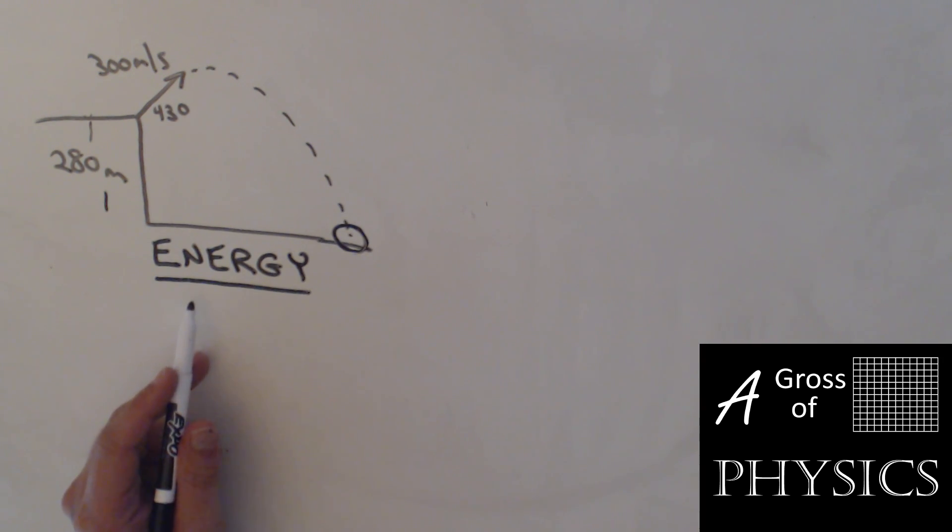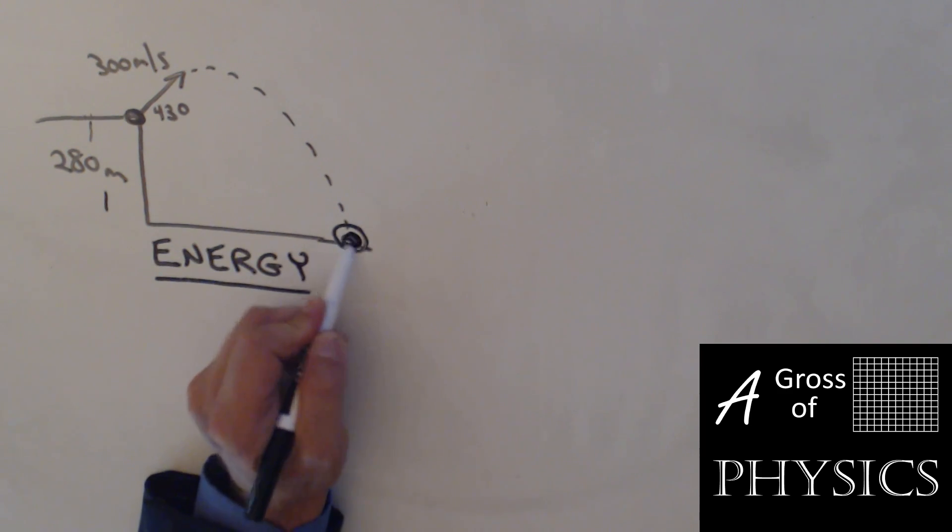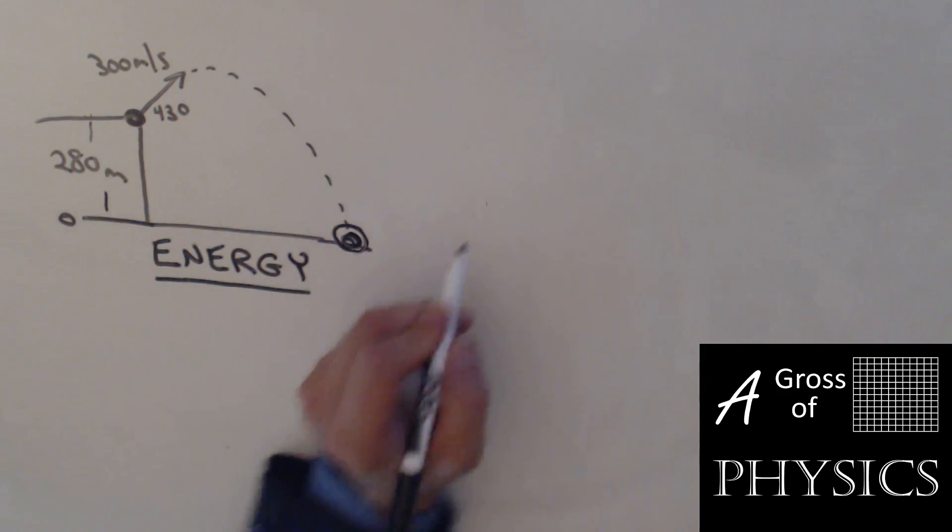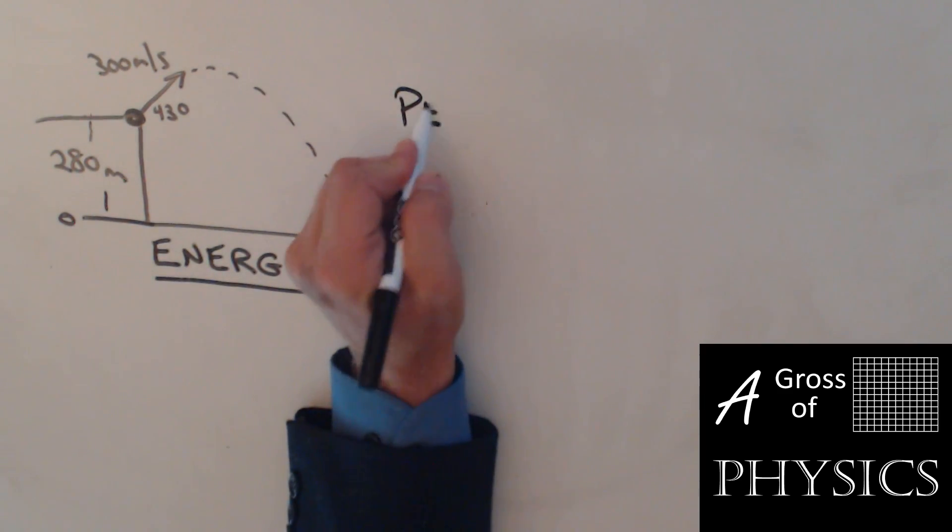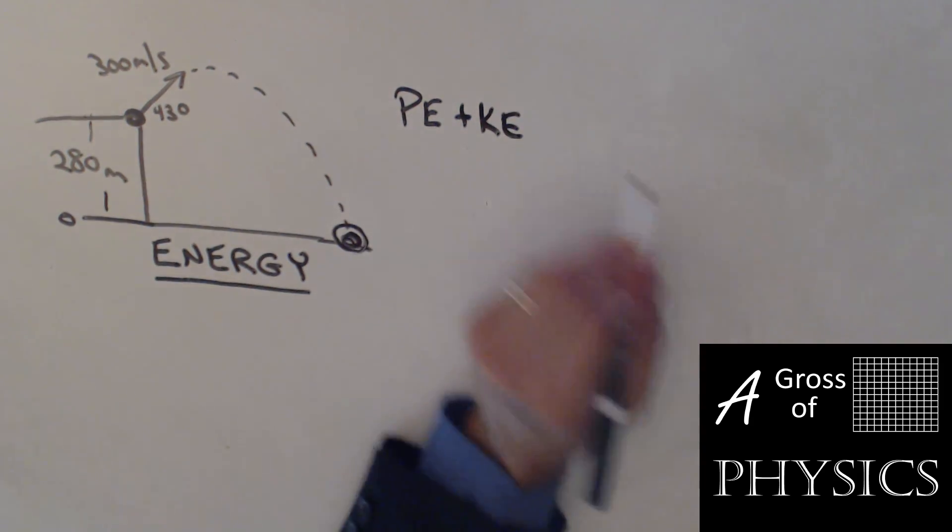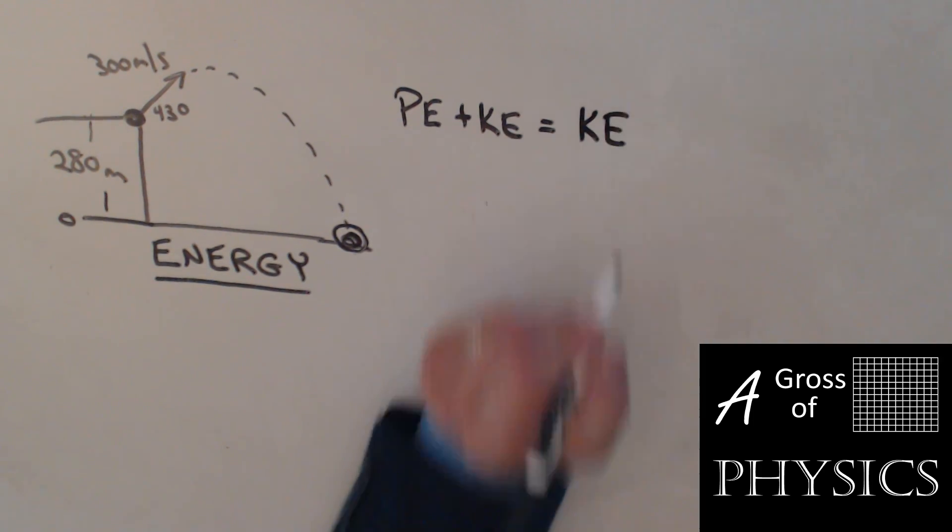Now we're going to look at the same problem again with the projectile using energy instead of projectile motion. With energy, we have to decide what type of energy it has at the top and what type of energy it has at the bottom. I'm going to define zero as the ground. So that means it has at the top both potential and kinetic, PE + KE. And then at the bottom, it's only going to have kinetic energy.